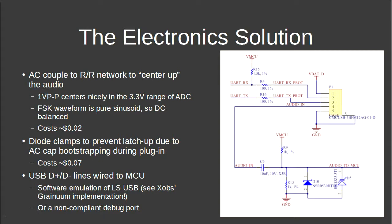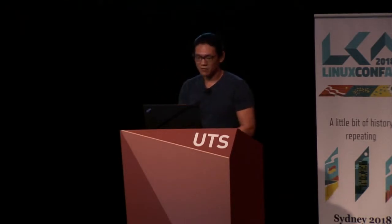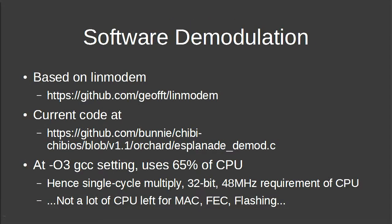The audio interface also lets us bit-bang USB low-speed, so the device can act as a little keyboard — you can touch pads and have it fire key presses, even play video games. The software uses non-coherent FSK demodulation — 250 multiply-accumulates per sample, requiring 20 mega-MACs per second at our sampling rate. We based it on a lin-modem repo; at -O3 GCC settings it uses 65% of CPU, leaving very little for the MAC layer, forward error correction, or flashing.